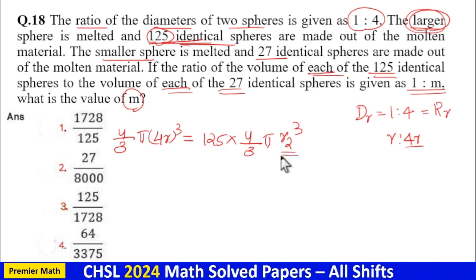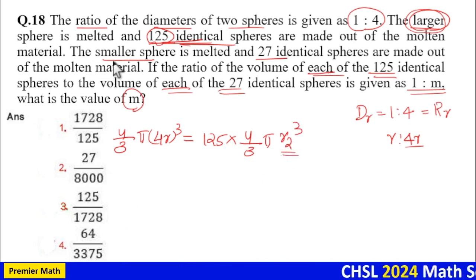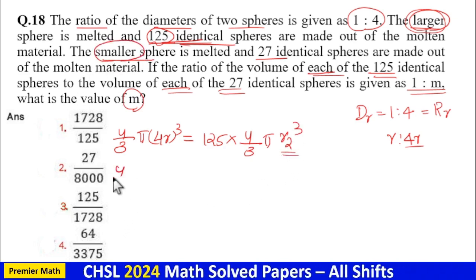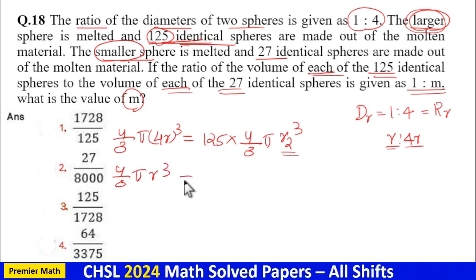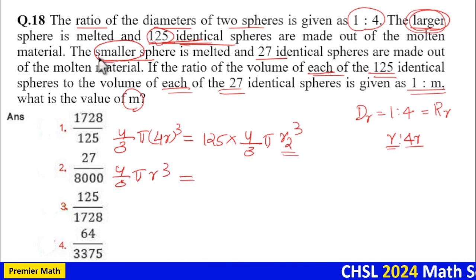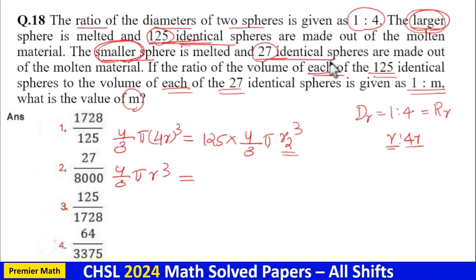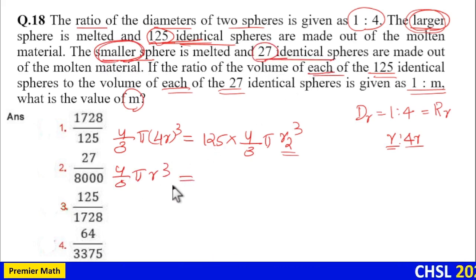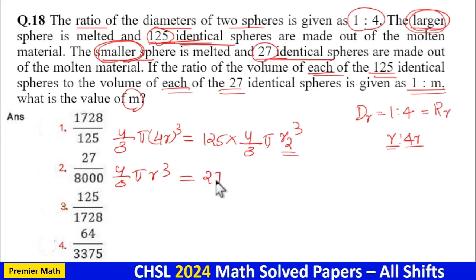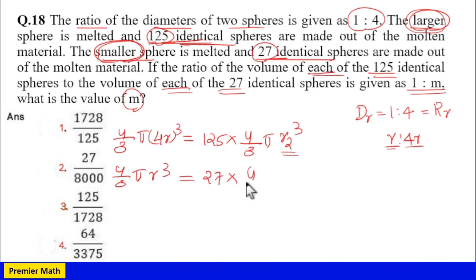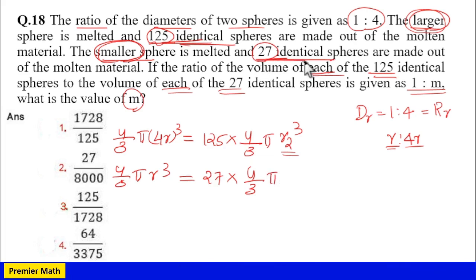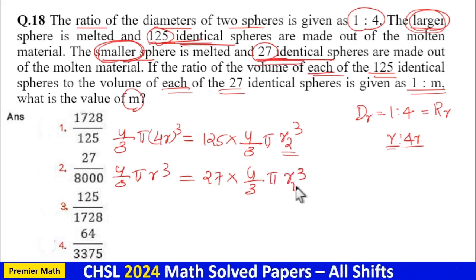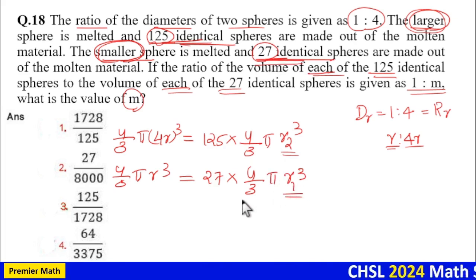Now we can find r2³. Similarly, the volume of the small sphere is (4/3)πr³. From this small sphere, 27 identical spheres are made. So the volume of the small sphere equals the volume of 27 identical spheres: 27 × (4/3)π × r1³, where r1 is the radius of each of the 27 identical spheres. From this we can find r1³.